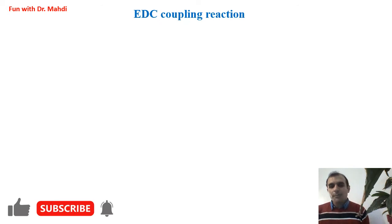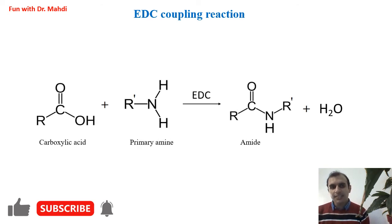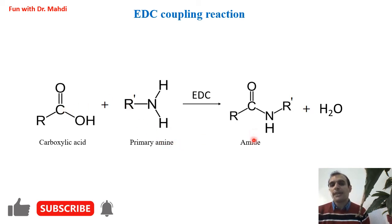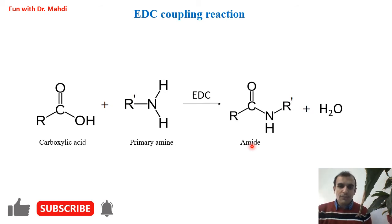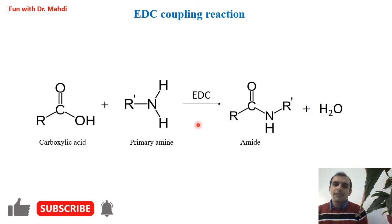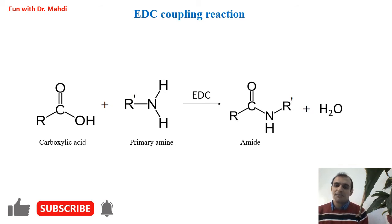The second type of amidation reaction is EDC coupling reaction. EDC coupling reaction is a reaction between a carboxylic acid group and a primary amine; the product will be an amide — that's why we call this reaction an amidation reaction. Please note, we need to use EDC, or 1-ethyl-3-(3-dimethylaminopropyl)carbodiimide — it's very important. We need to use this catalyst to do this reaction. In the presence of this catalyst, this reaction can be done very fast — in one hour, this reaction can be done.